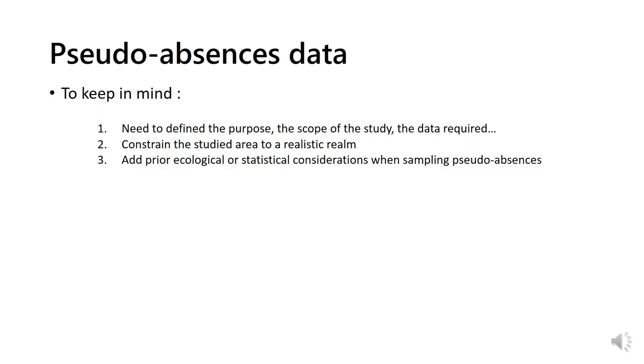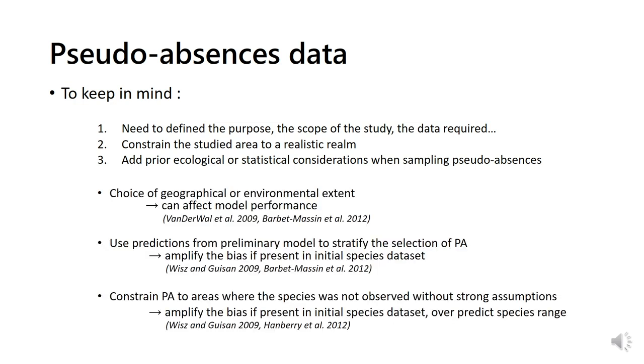More generally, remember that before running any model, you should give a good thought to the scope and the purpose of your analysis, as well as to your study area, and if possible, do not hesitate to add prior assumptions linked to the species ecology when sampling pseudo-absences, but you don't have to make it up. If there is none, there is none, and choose a random method. You should also keep in mind that you will build a model which is only a representation of your data, and the assumptions you make of it, and the choices you make at each step may lead you to a different pattern or outcome.